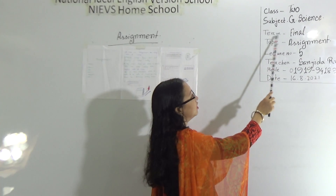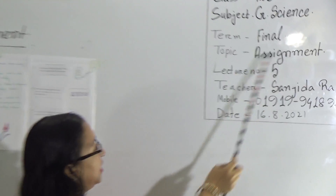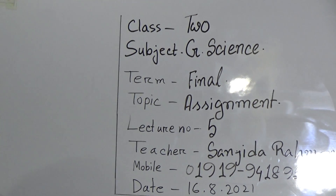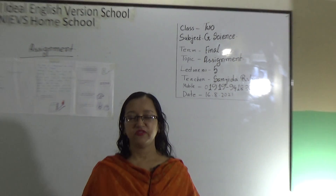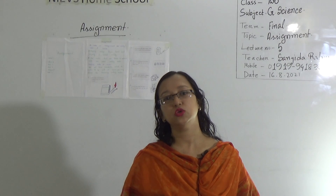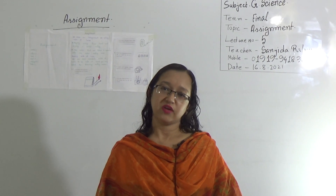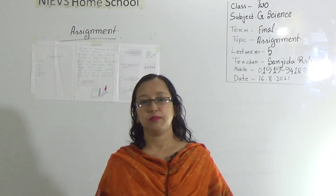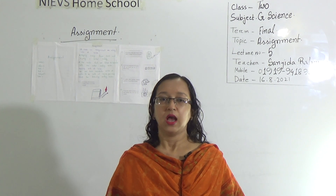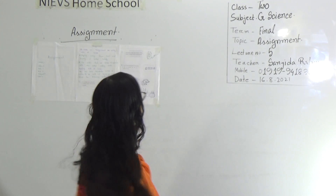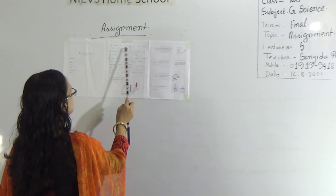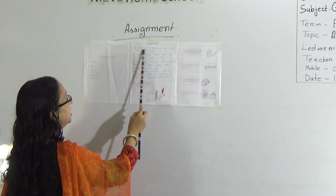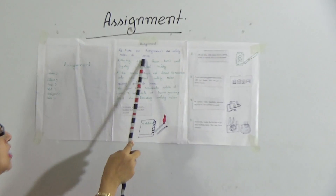Our term final topic is assignment and lecture number 5. My name is Shanji Darman and this is my contact number. My dear students, in our previous session — the half yearly session — you submitted an assignment. For the final term, you also submit another assignment, and this assignment is from Chapter 7. The assignment topic is: make an assignment on safety rules at home.